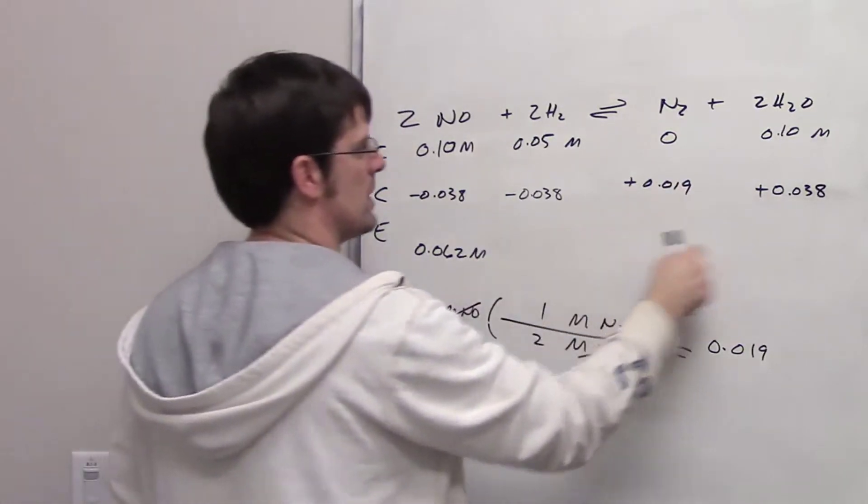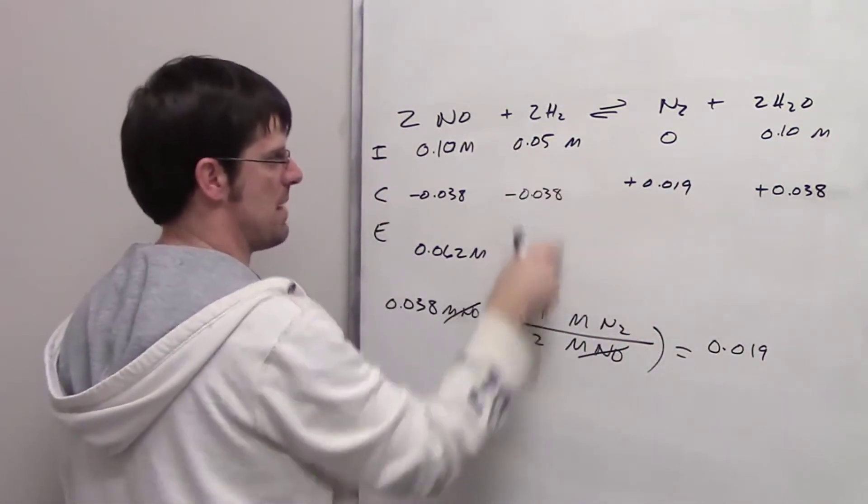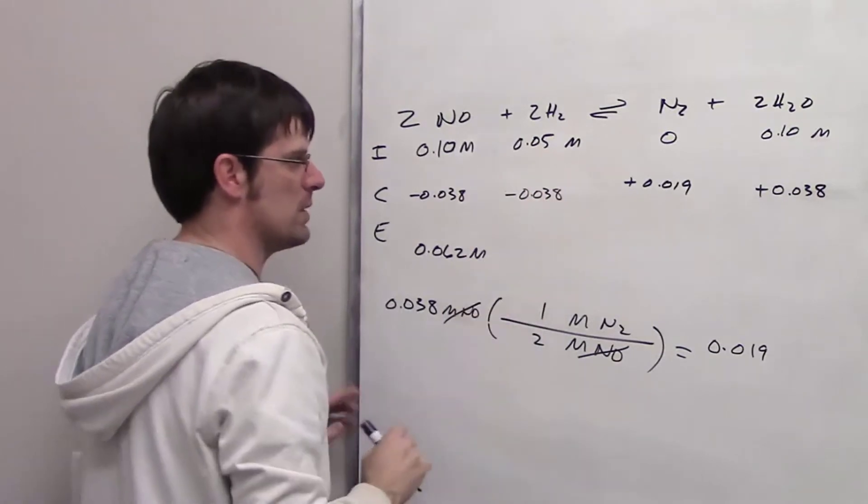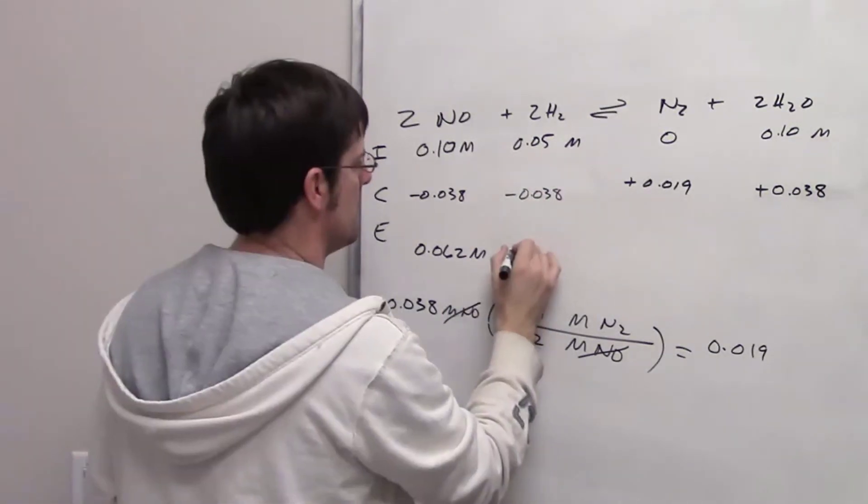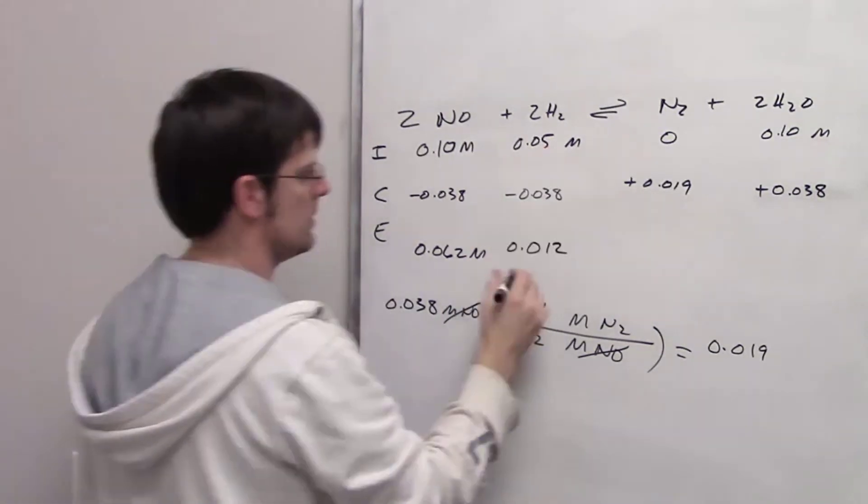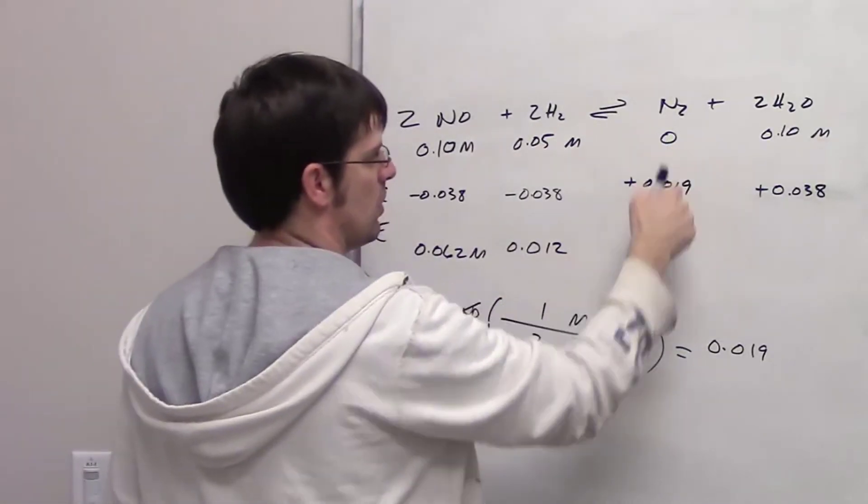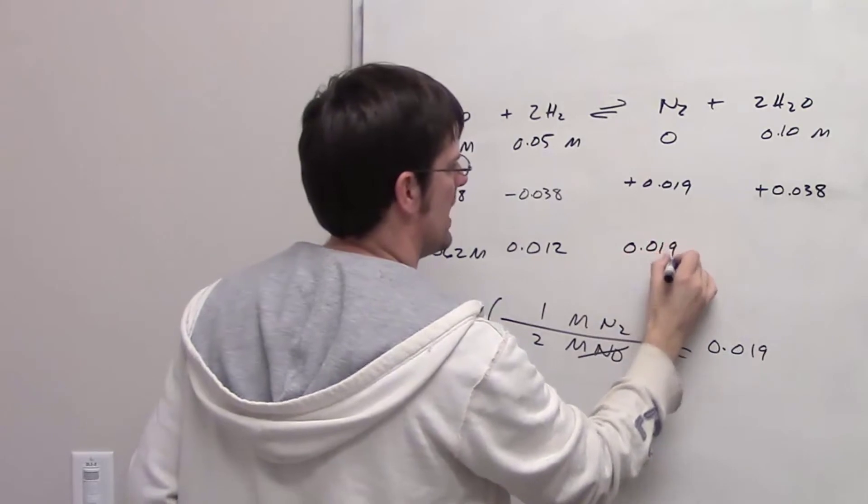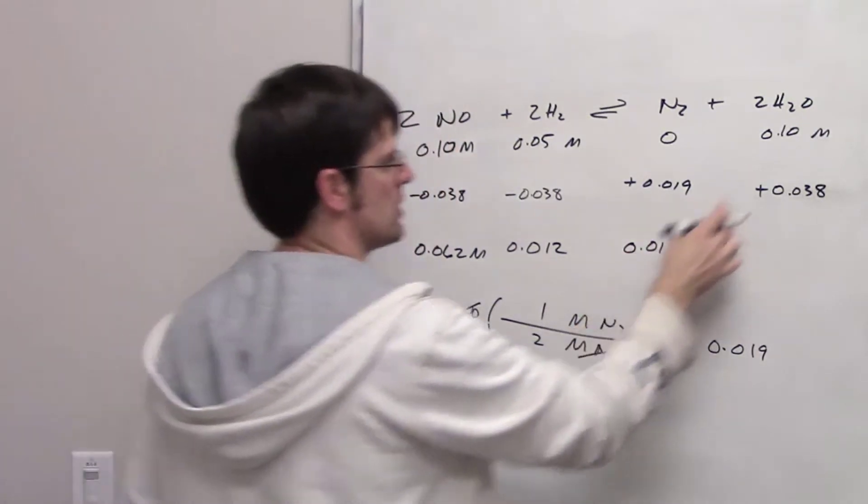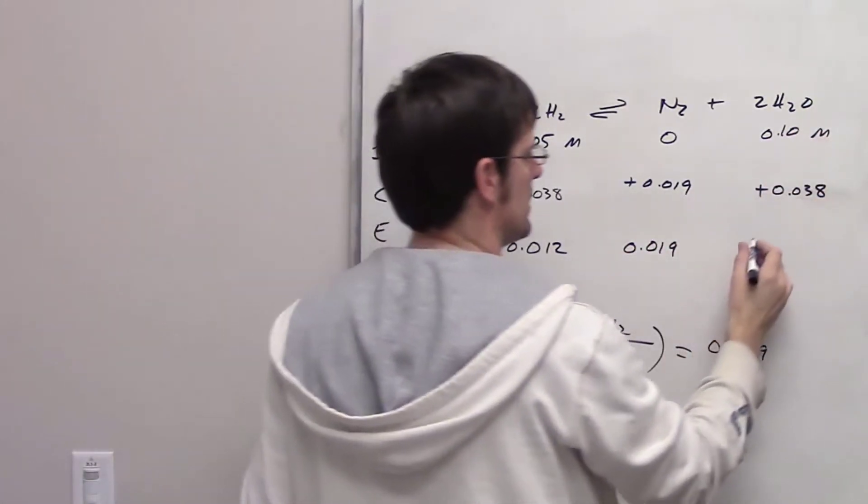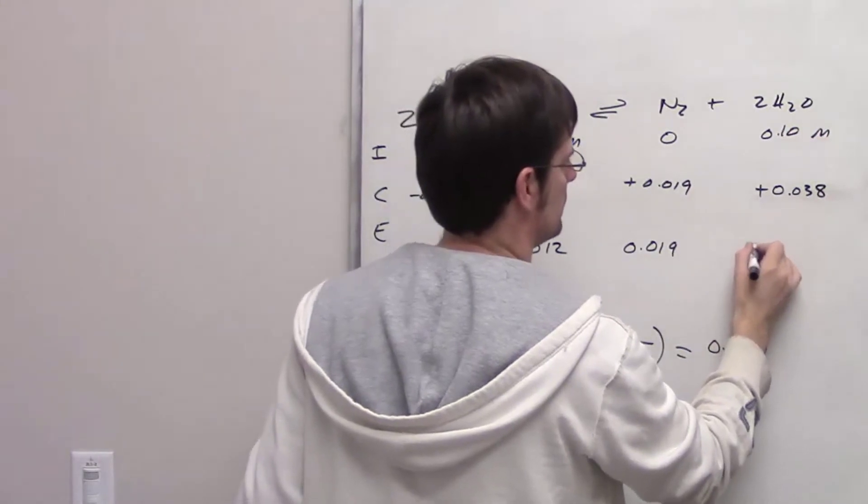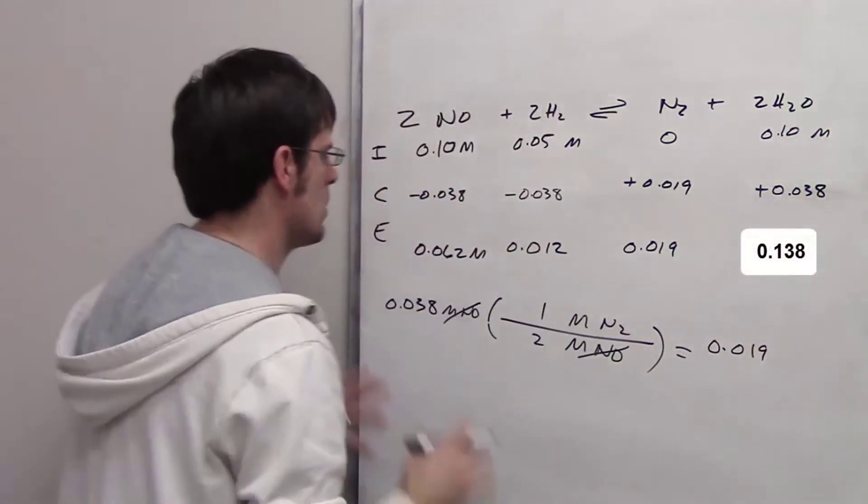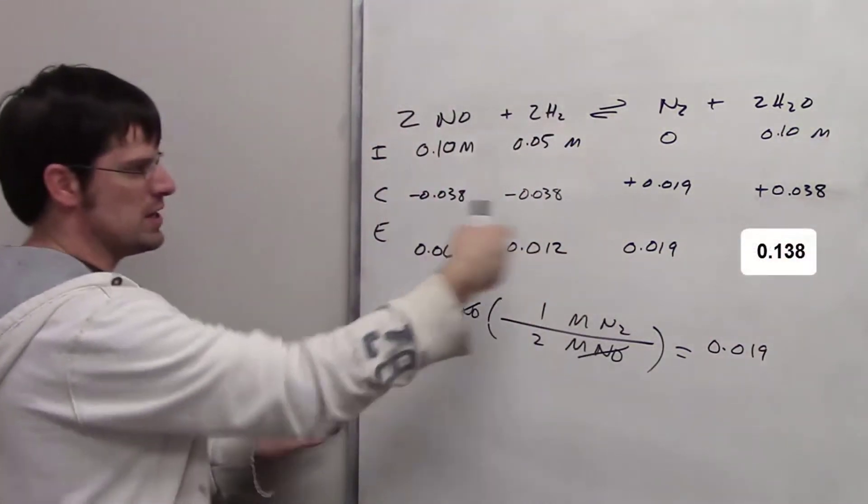Now to get the equilibrium concentrations, all I have to do is do the math. 0.05 subtract 0.038 is going to be 0.012. 0 plus 0.019 is going to be 0.019 as my final equilibrium concentrations for each of these substances.